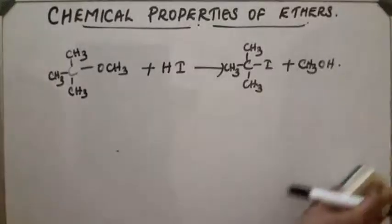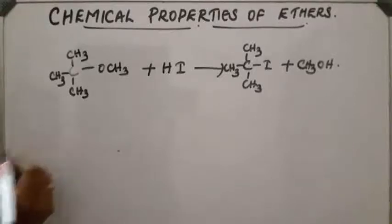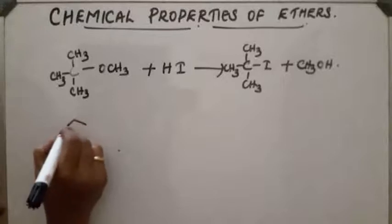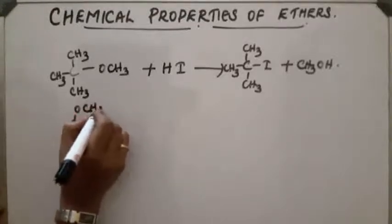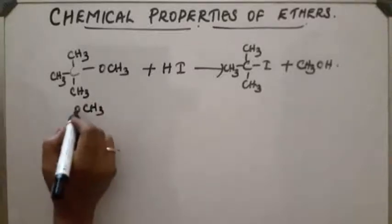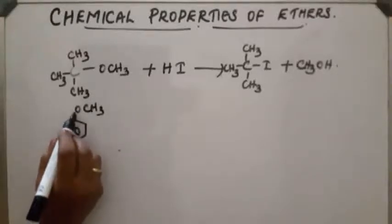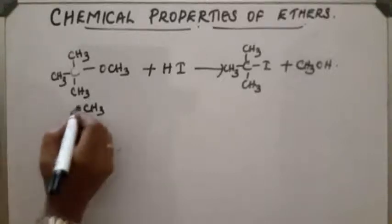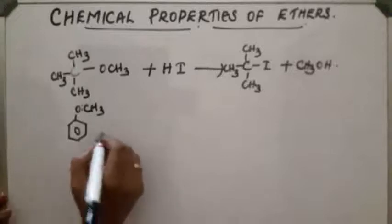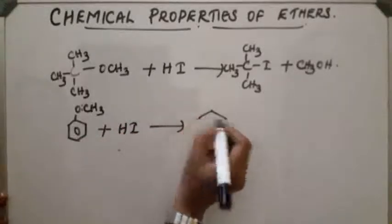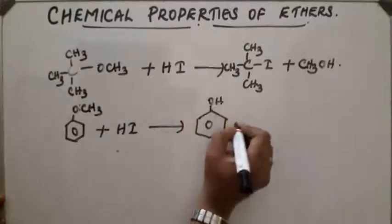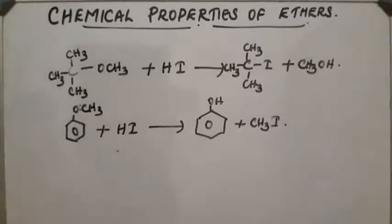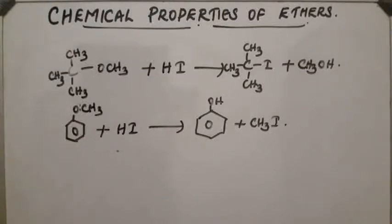The next case is aryl alkyl ether. The C-O bond to the sp2 aryl carbon is stronger due to partial double bond character, so cleavage takes place at the other C-O bond. On reaction with HI, the products are phenol (ArOH) plus CH3I. Since phenol is a highly stable compound, further reaction with HI does not take place. This concludes the first chemical property: reaction with hydrogen halide.